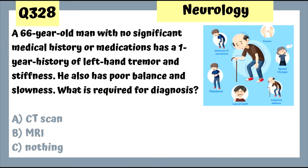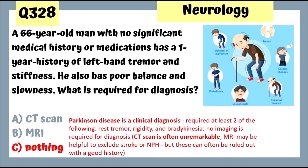Question 328: A 66-year-old man with a one-year history of left hand tremor, stiffness, poor balance, and slowness — this is Parkinson's disease. It's a clinical diagnosis; nothing is required beyond clinical assessment. CT is often unremarkable; MRI may help exclude other conditions. Parkinson's requires two of the following: tremor, rigidity, or bradykinesia.